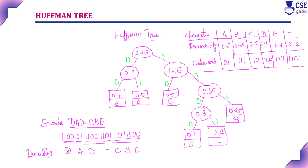For encoding, consider the symbol and implement the code word. For decoding, consider the code word and implement the corresponding symbol. This is all about Huffman tree and Huffman code — you just need to understand the logic properly. Thank you for watching this video.